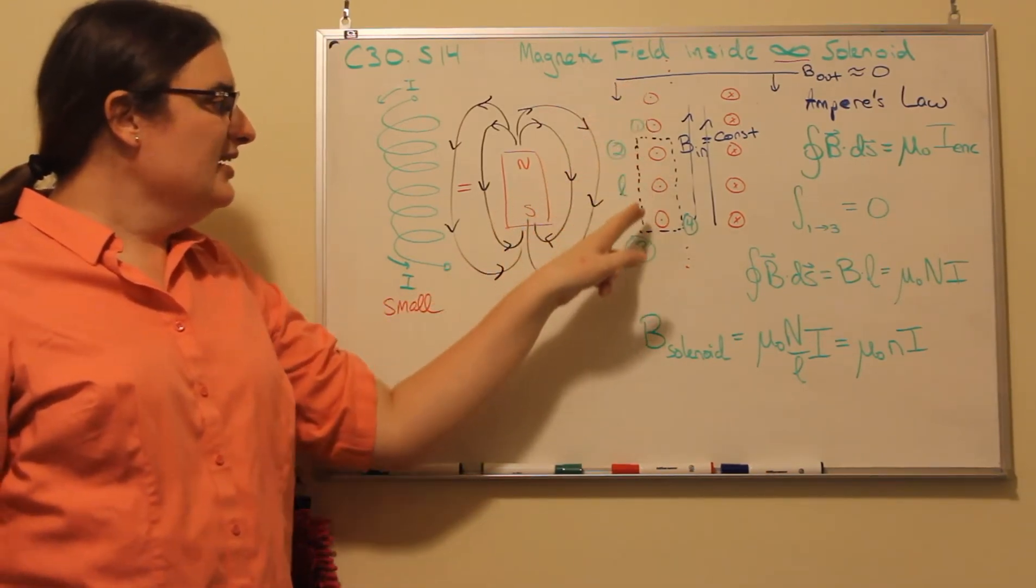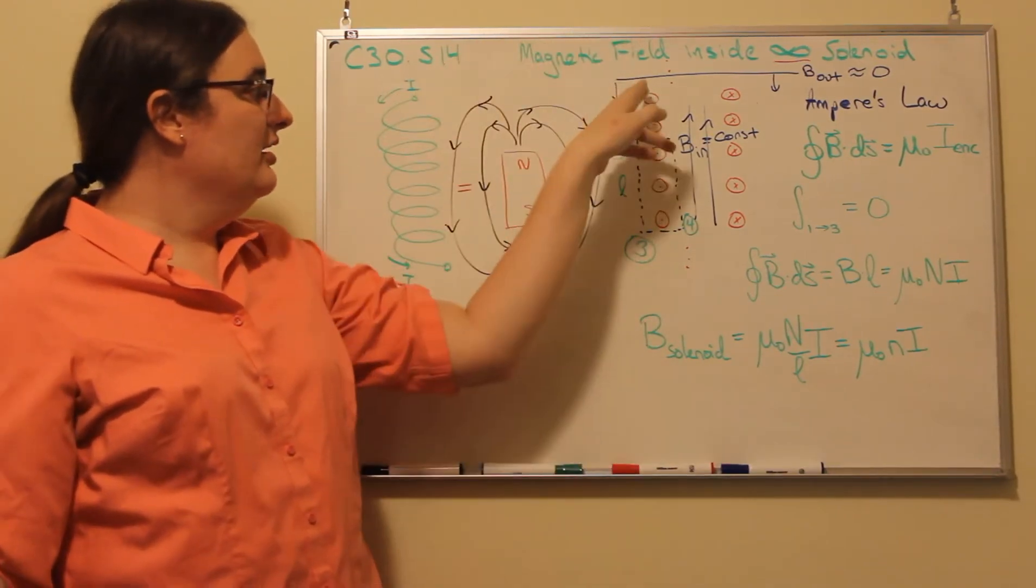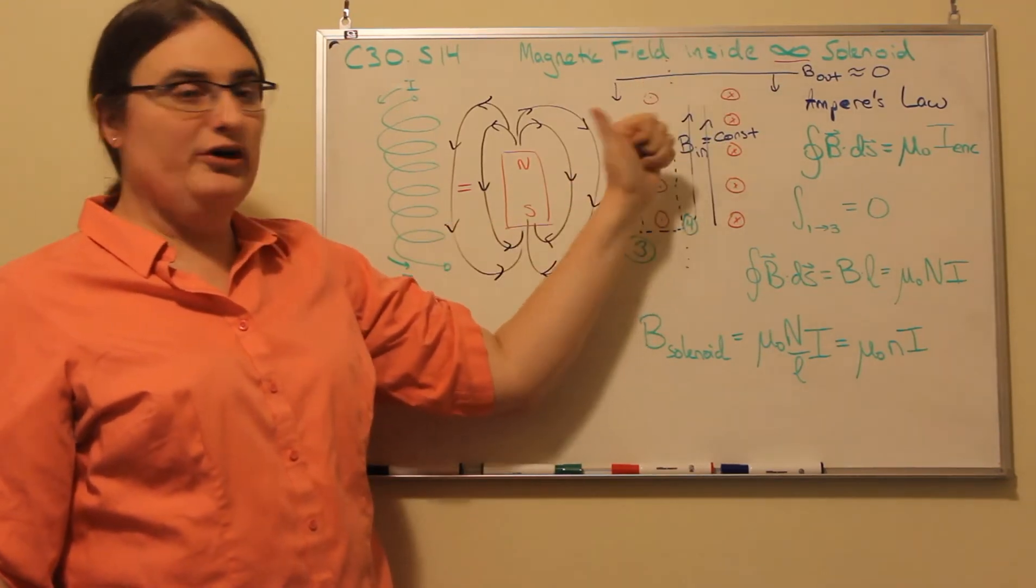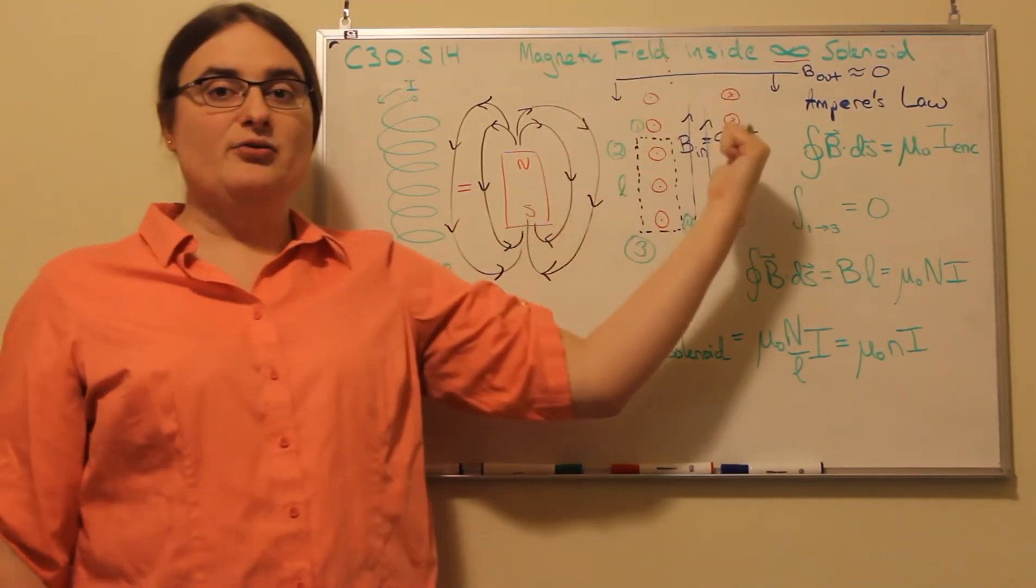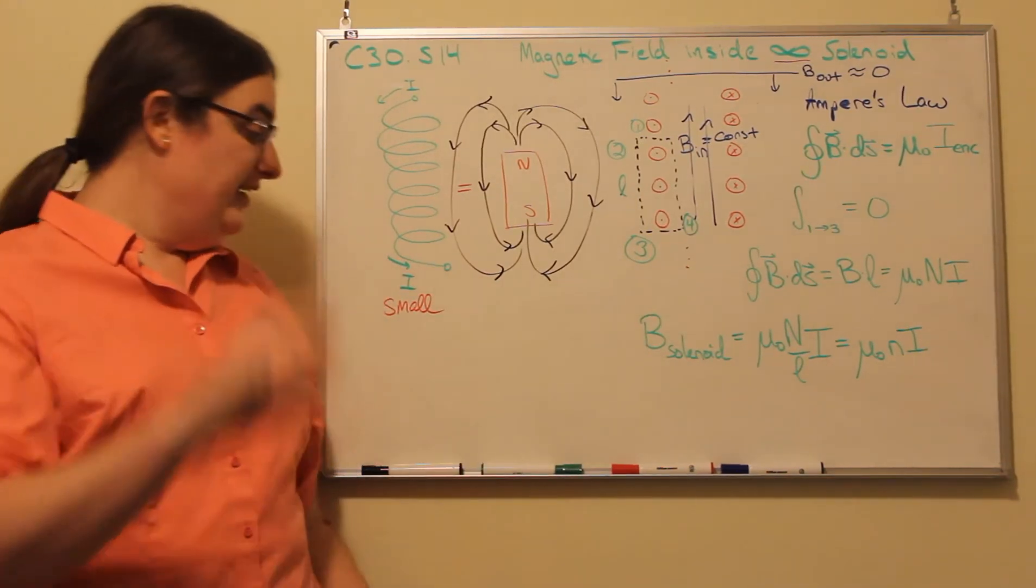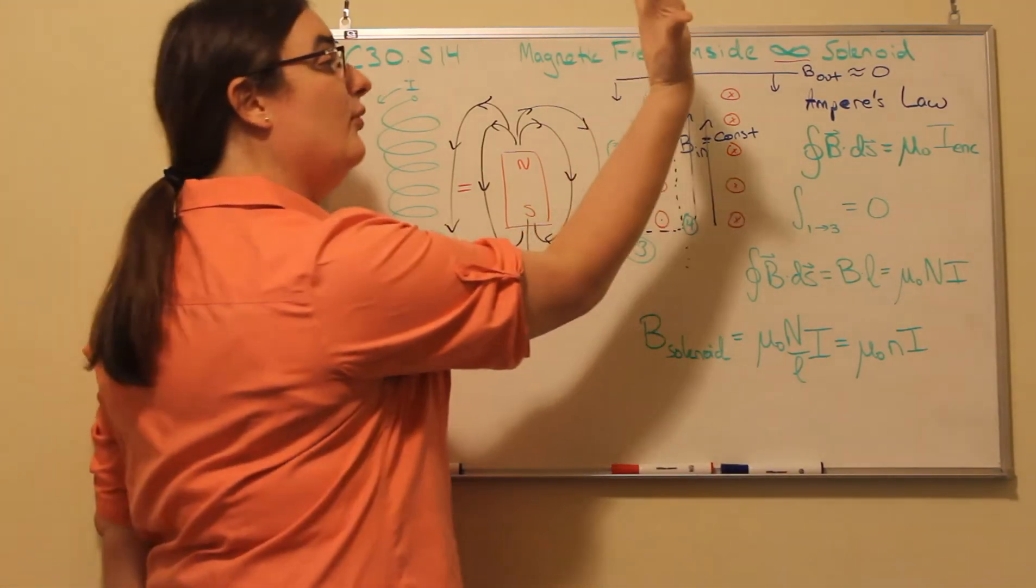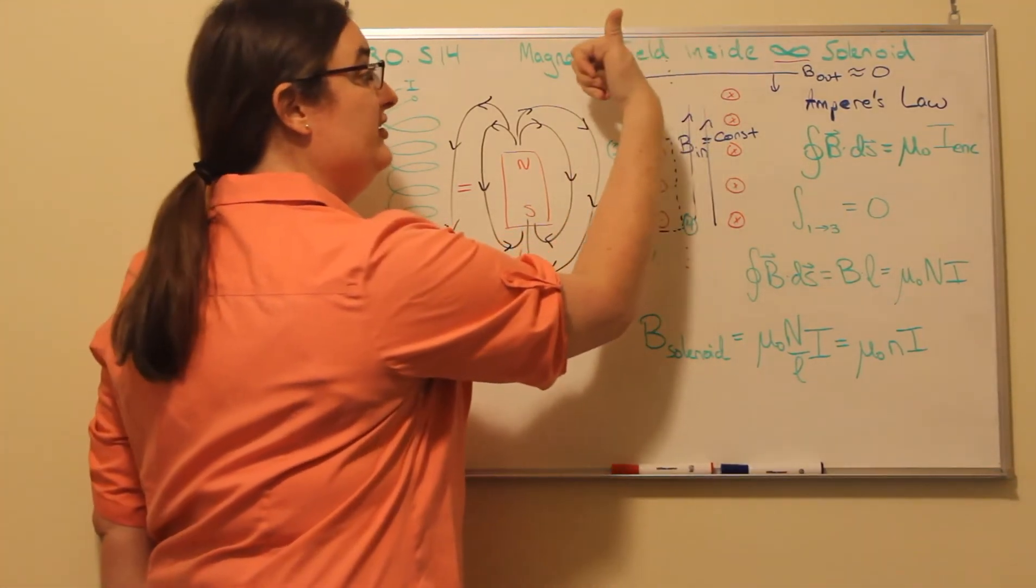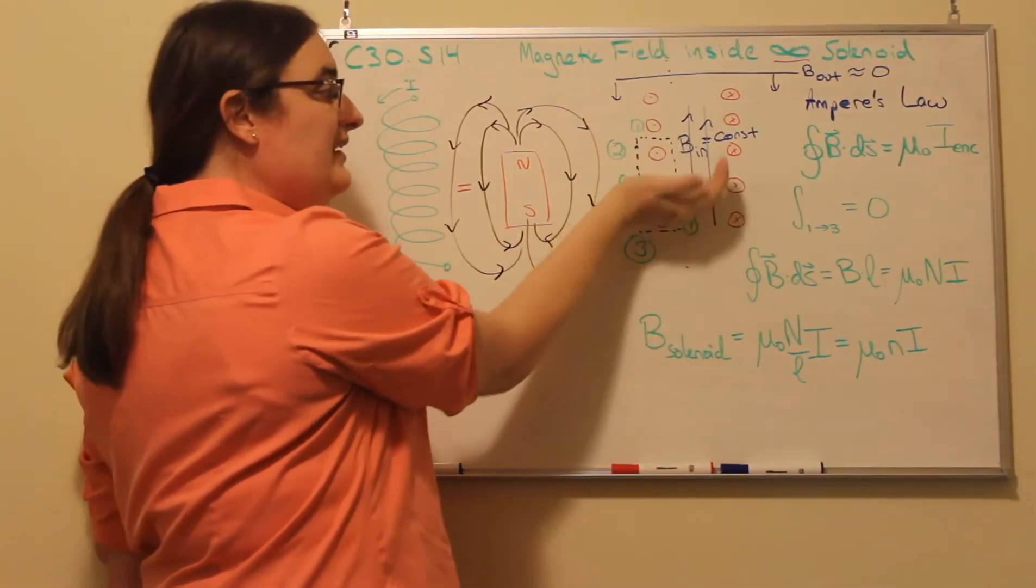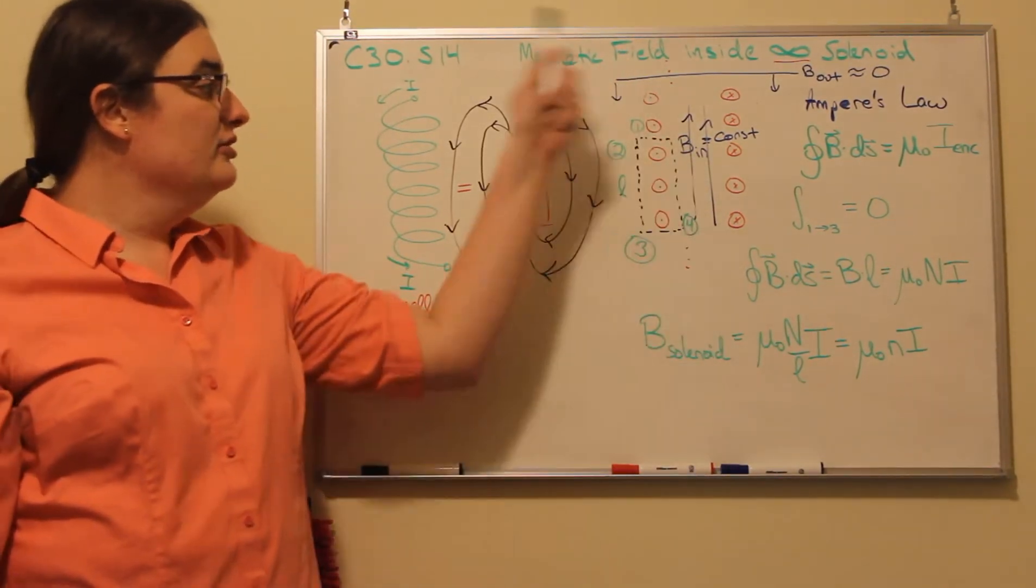For my solenoid, I'm going to assume that it's infinitely long and that the coils, if I slice them, the left half is going to be coming out of the board and the right half is going to be going into the board. If I were to apply the right-hand rule, something in my left hand, thumb going out of the board, my fingers show the magnetic field lines looping around the wire, so inside the coil, my magnetic field would be going straight up.